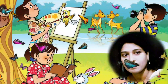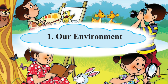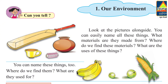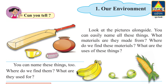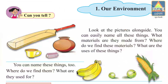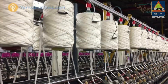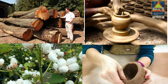Hi kids, we will start the first lesson of EVS: our environment. Look at the picture alongside. You can easily name all these things: bat, pot, cup, thread. What materials are they made from? A bat is made up of wood, pot is made up of soil, cup is made up of clay, and thread is made up of cotton. Where do we find these materials? Wood we get from the trees, soil we get in nature, clay also we get in nature, and thread we get from the cotton plant.